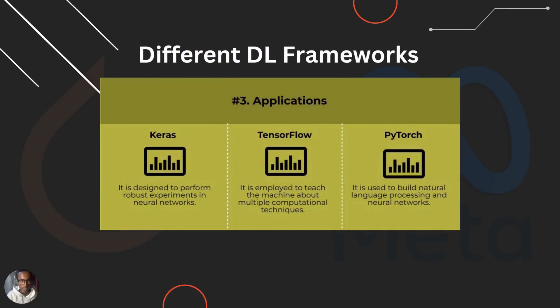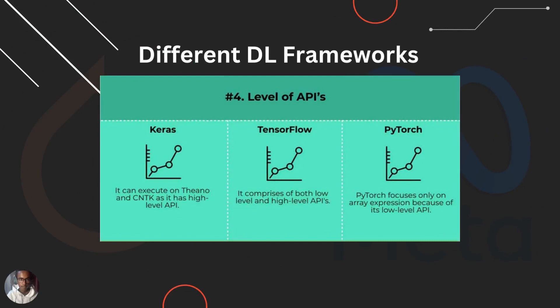In terms of applications, Keras is designed to perform robust experiments in neural networks, as is TensorFlow, which is employed to teach the machine about multiple computational techniques. PyTorch is mostly used to build natural language processing models and neural networks. When comparing the level of APIs, Keras can execute on Theano and CNTK as it has high-level APIs, TensorFlow comprises both low-level and high-level APIs, and PyTorch focuses only on array expression because of its low-level API.